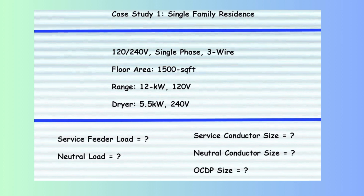Key updates in the 2023 NEC: Inclusion of garage area — the 2023 NEC requires that the floor area of attached garages be included when calculating the minimum lighting load for dwelling units. Service disconnect requirements — an exterior emergency disconnect is now mandated for single-family dwellings. These updates are crucial for designing a safe and code-compliant electrical system that meets the modern demands of residential living.